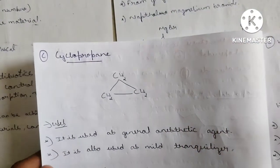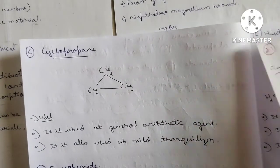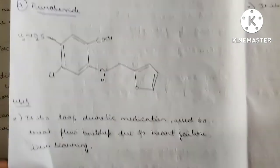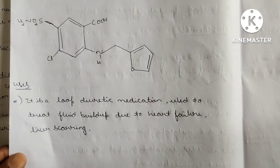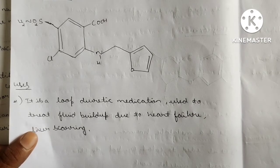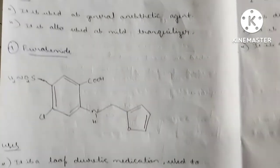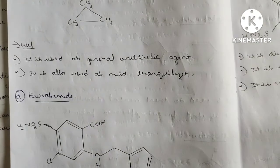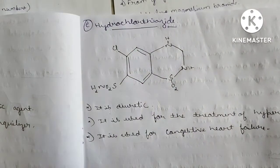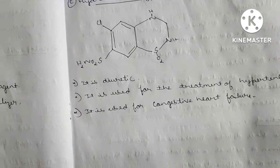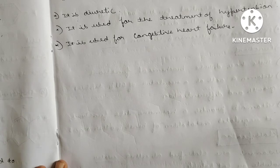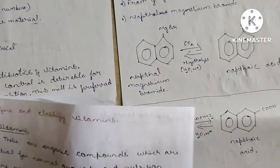Cyclopropane: A very simple structure; a general anesthetic agent used as a mild tranquilizer. Furosemide: Benzene ring plus furan ring; it is a loop diuretic medication used to treat fluid buildup due to heart failure and liver scarring. Hydrochlorothiazide: Also a diuretic drug used in conditions like congestive heart failure.